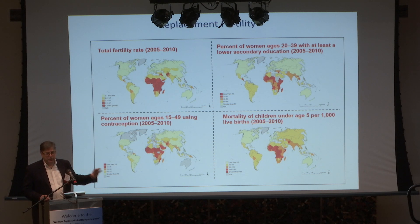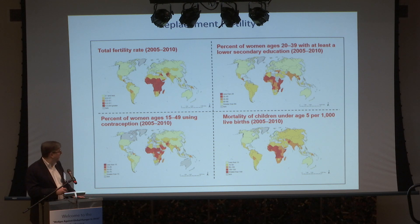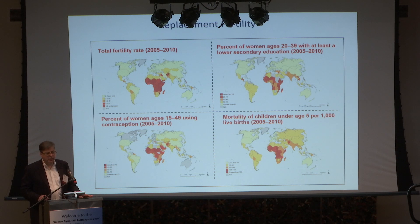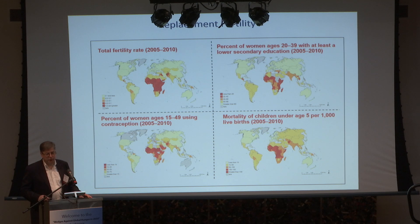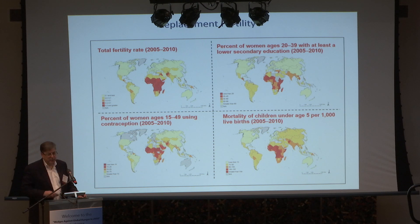On population: in the vast majority of the world, fertility rates are already very close to or below replacement levels. We'll get about a billion more people in Asia not because they have many children today, but because they used to and that population is aging. However, Africa is a special exception — it still has fertility rates over five, and sub-Saharan Africa is going to go from about 900 million to over 2 billion by 2050. A country doesn't have to be rich to reduce its fertility rates — every culture reduces them if you educate girls through lower high school, keep babies alive, and provide access to family planning.